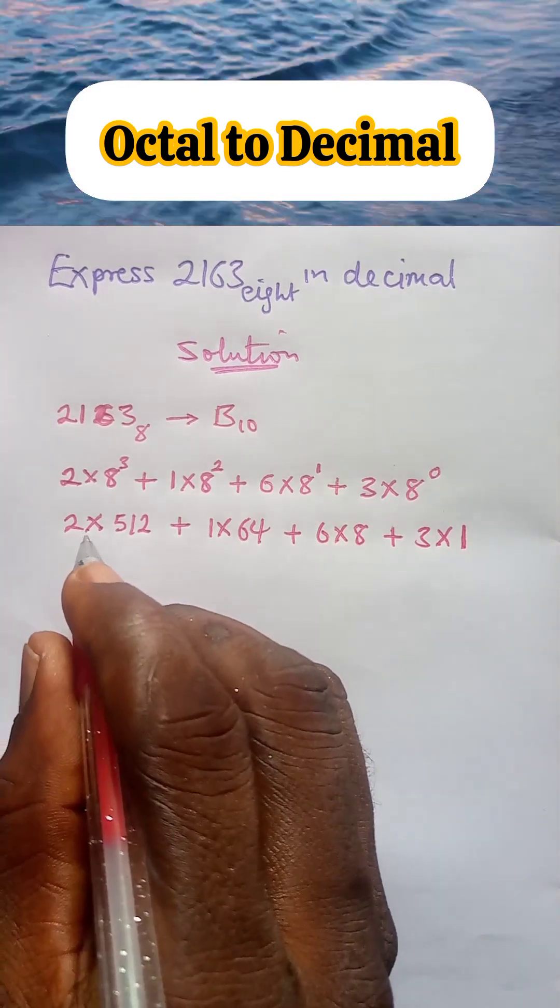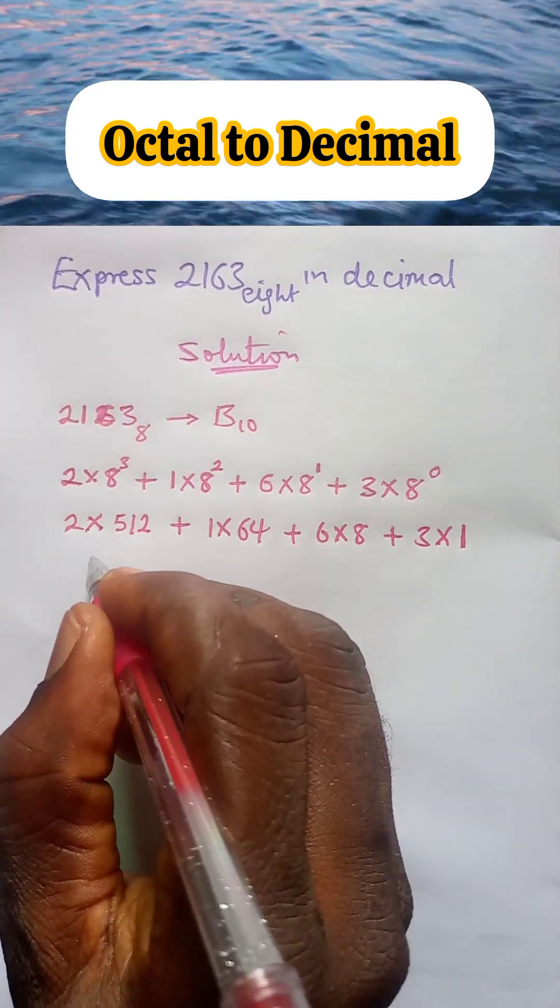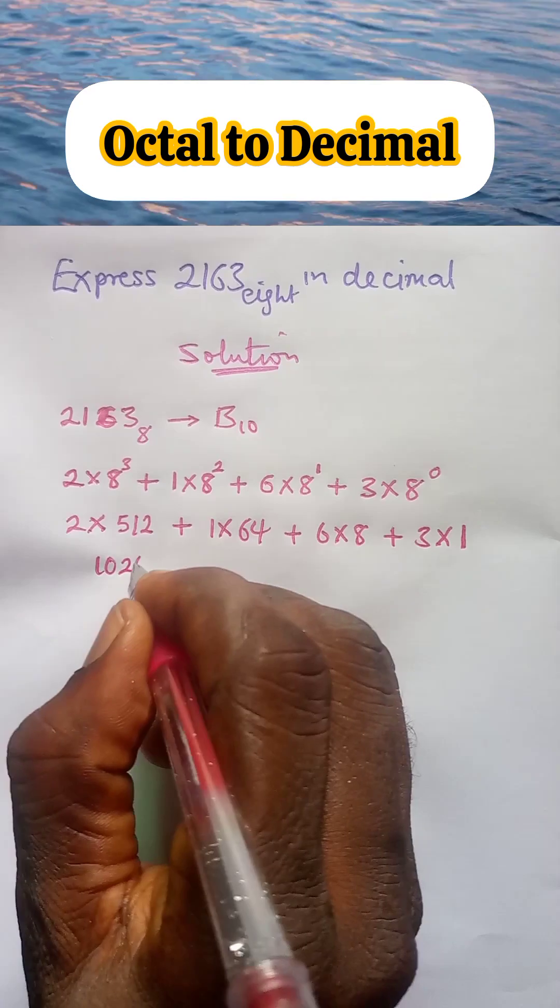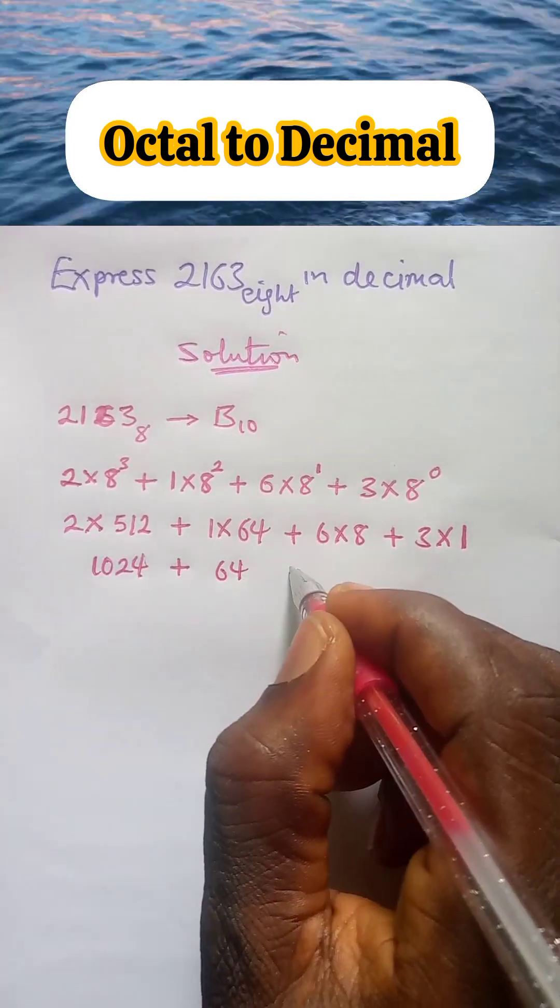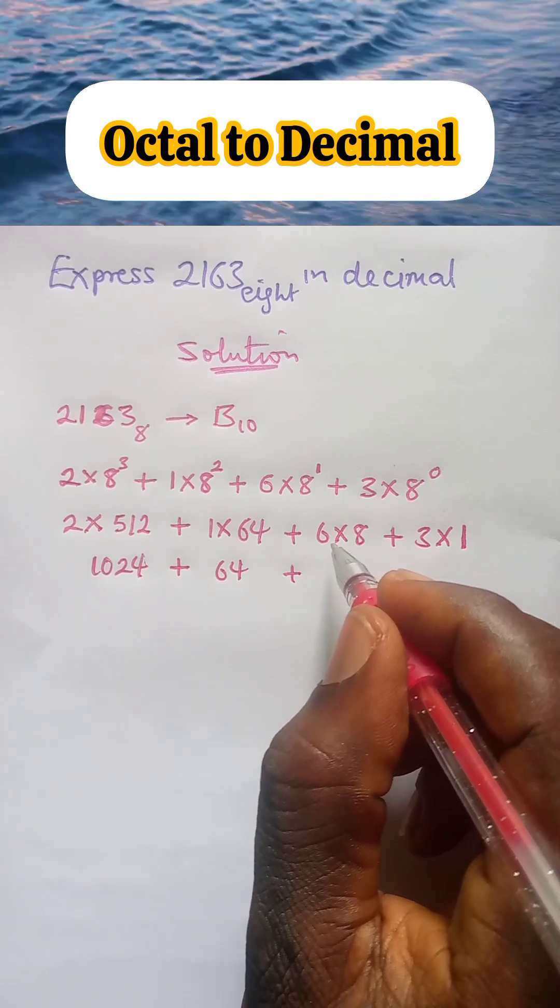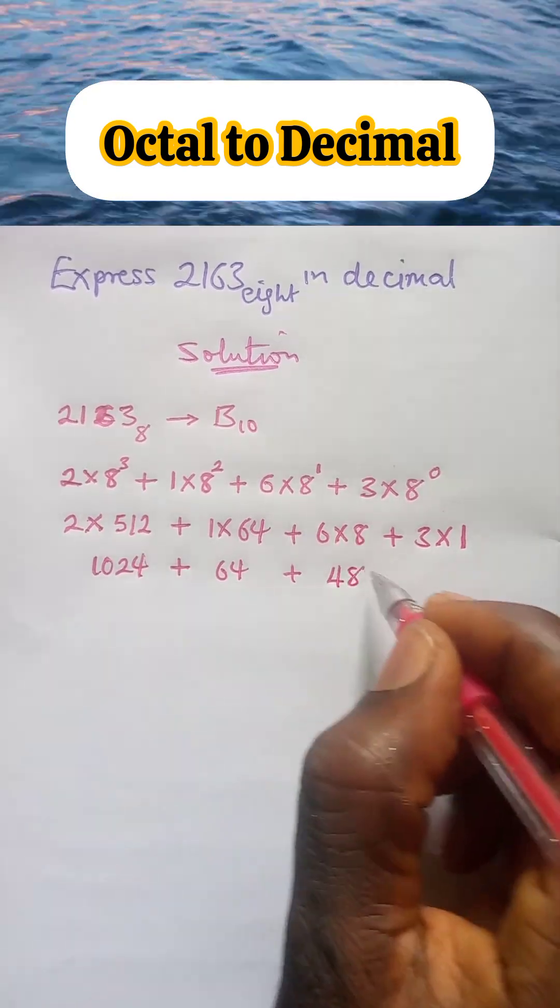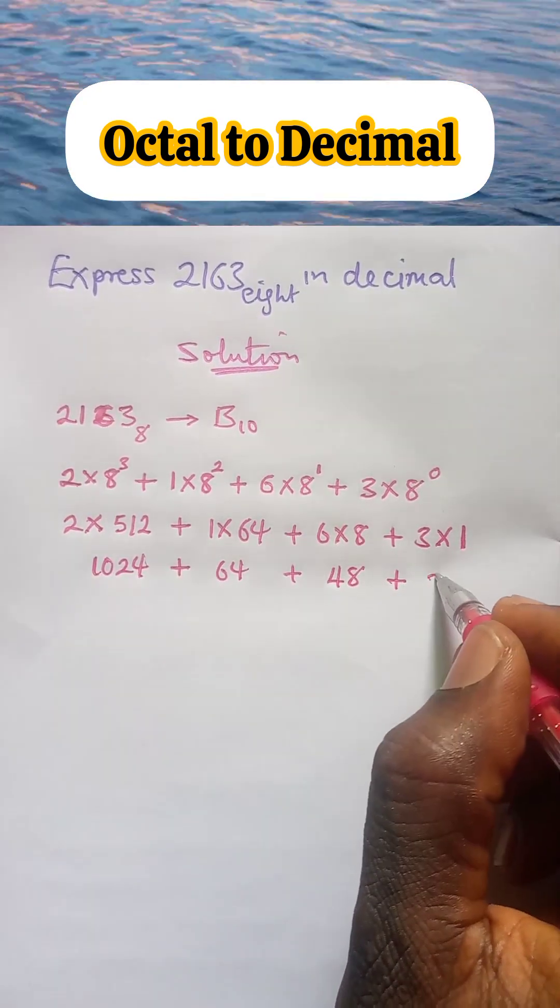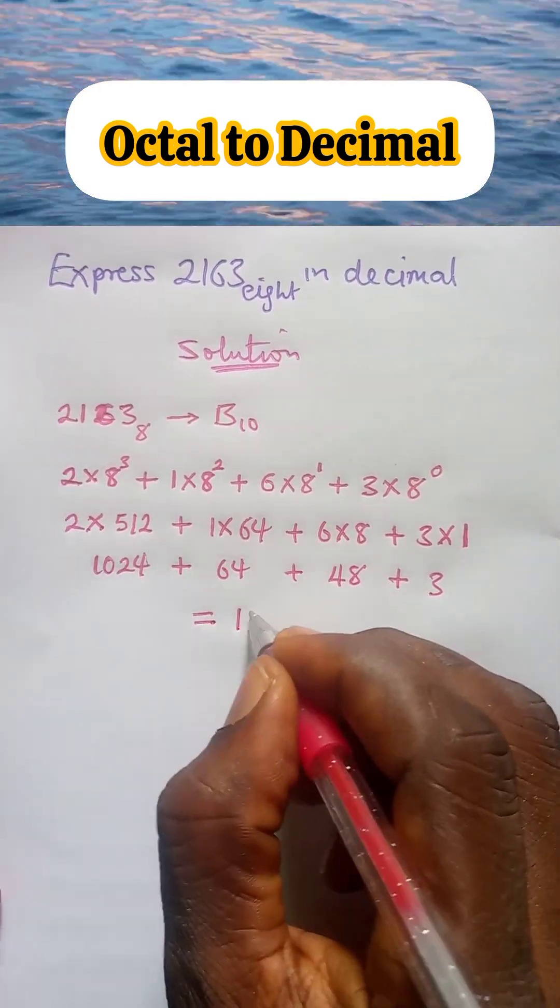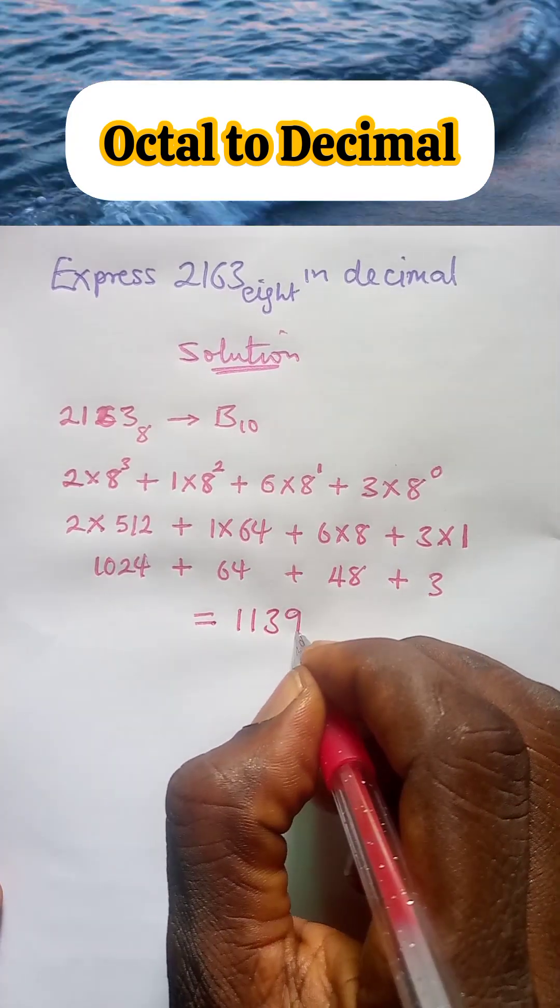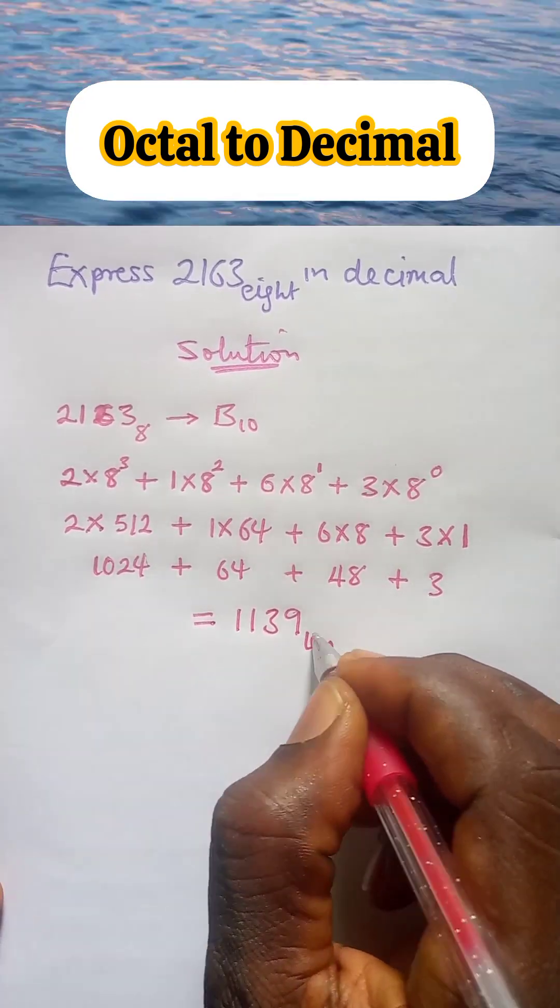Next, 2 multiply 512 gives us 1024, plus 1 multiply 64, plus 6 multiply 8, plus 3 multiply 1. When you add all of this together, you have 1139 to base 10.